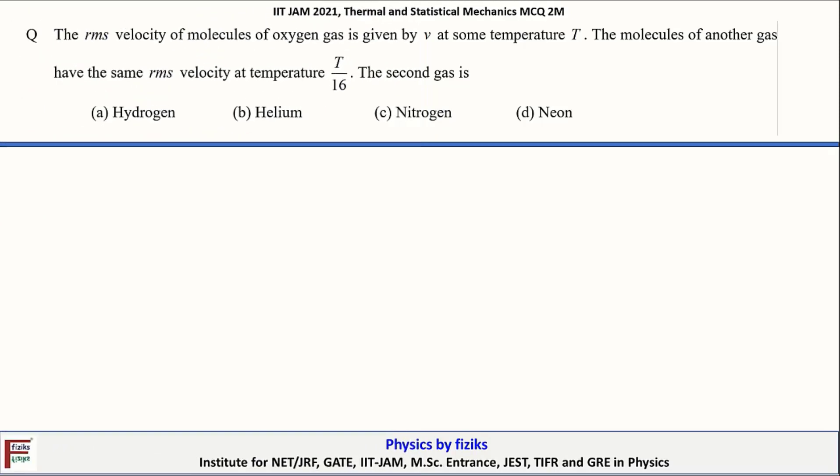Let's take a look at the statement of the problem. This question appeared in JAM 2021. The root mean square velocity of molecules of oxygen gas is given as V at some temperature T. The molecules of another gas have the same RMS velocity at temperature T divided by 16.